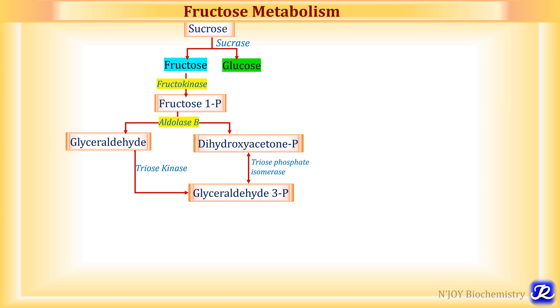Let's continue with the further reactions of fructose metabolism. We get fructose either from honey, fruits rich in fructose, or from sucrose. Sucrose is broken down into fructose and glucose by the enzyme sucrase, and ultimately we get dihydroxyacetone phosphate and glyceraldehyde 3-phosphate, which are intermediates of glycolysis.